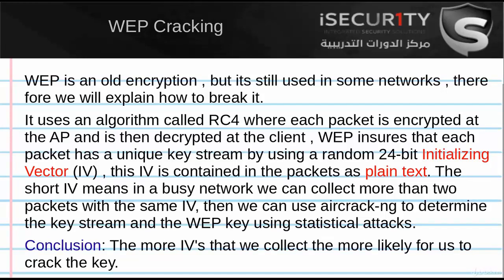When the client sends a packet, it encrypts it and the access point decrypts it using the key. Each packet sent into the air has a unique key stream. WEP ensures the key stream is unique by using a 24-bit initialization vector. The IV is a random number sent with each packet in plain text — it's not encrypted, so if you read the packet you can read the IV directly.